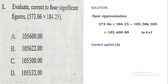The question wants us to approximate to four significant figures. Looking at the value 105,586.305, the fourth significant digit is 5. The number after it is 8, which is more than 5, so we round up: the 5 becomes 6, and every digit after it becomes zero. We get 105,600.00, which is the value approximated to four significant figures. The correct answer is option A.